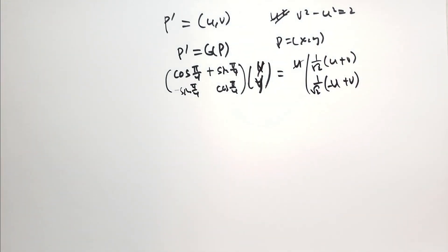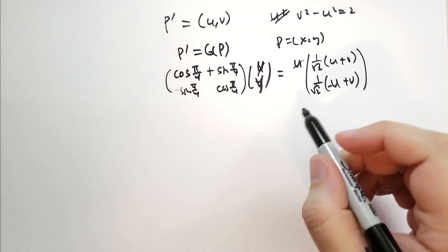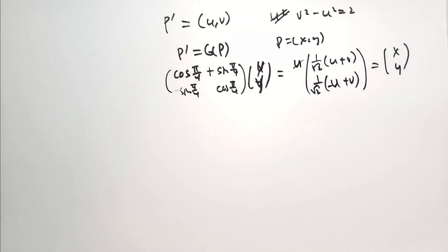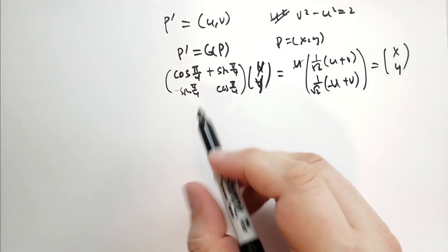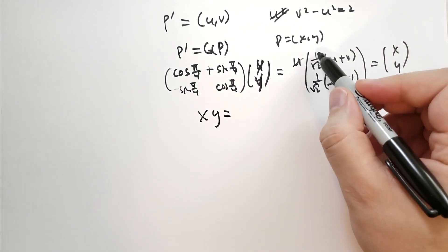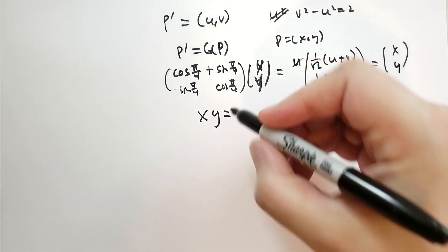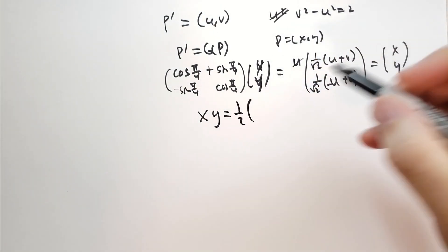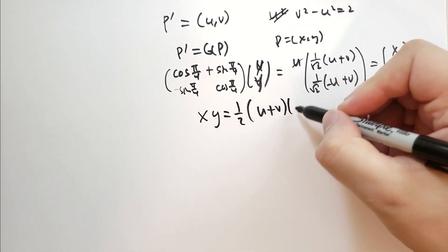And then we take the product of this xy. So we're going to say that's equal to xy. We take the product of that. So x times y is equal to, well, this 1 over root of 2 times 1 over root of 2 is just going to be 1 half.